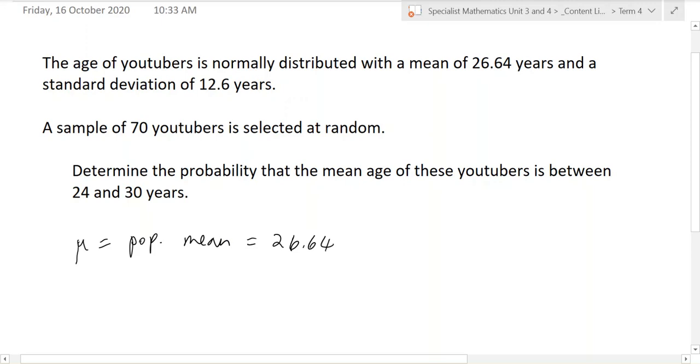So that's going to be useful for determining our sample mean. Sample mean is capital X with a bar over the top. We don't know what that is. The number in the sample is a little n and in this it's 70 YouTubers.